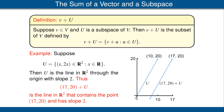The reason it contains the point (17, 20) is that U contains the point (0, 0), and when we add those two vectors, we get the point (17, 20). Note that the subset (17, 20) plus U is parallel to the original subspace U.